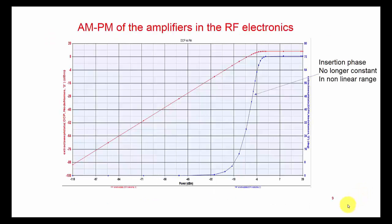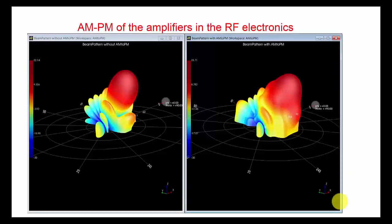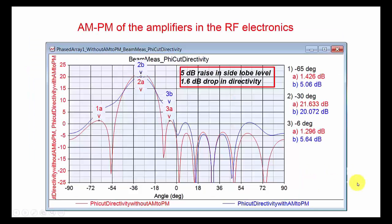Let us first understand the AM-to-PM of the amplifier and its effect on the far-field pattern. As the input power to the amplifier is increased, the phase change the signal undergoes through the amplifier is no longer a constant. Most phased array designs use amplitude distribution at the antenna elements to control the side lobe levels. This means the amplifiers in various channels feeding to the antenna elements will be operating at different power levels when an amplitude tapering window is applied across the array. We see the far-field pattern with and without the AM-to-PM effect here. We can see a 5 dB raise in side lobe level and a 1.6 dB drop in directivity.